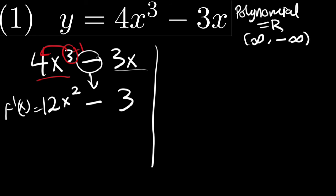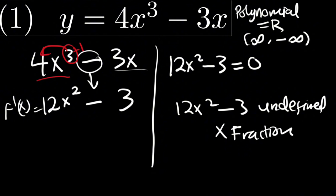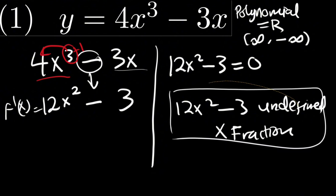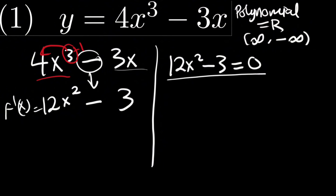Now we will make this derived function equal to zero. We will also check if this function can be undefined. Because there is no fraction here, this cannot be undefined. So this function can only be equal to zero.